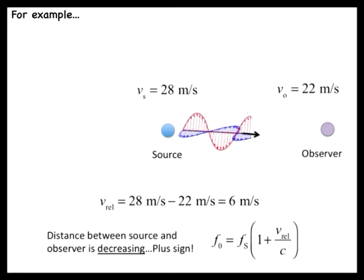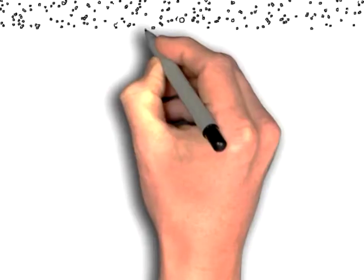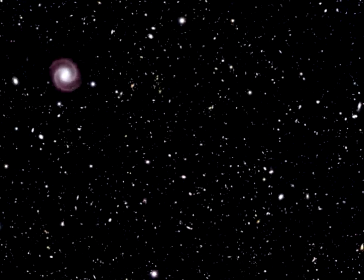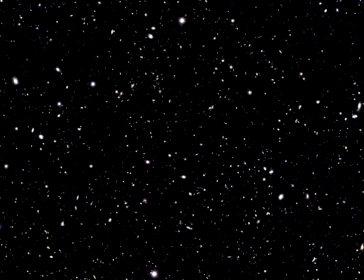The Doppler effect of electromagnetic waves provides a powerful tool for astronomers. By measuring the shift in frequency of the light from distant objects, astronomers can determine if the object is moving toward or away from Earth and what the object's speed is relative to it.